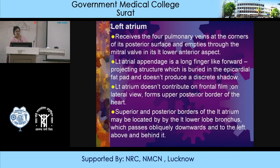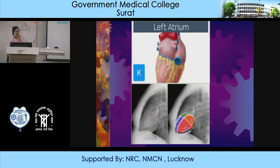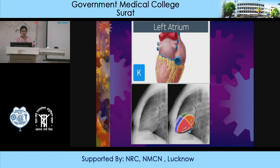You can see the pulmonary veins entering into the left atrium. On the lateral view, the right ventricle predominantly forms the anterior aspect of the heart and is in close relation with the sternum. The left ventricle forms somewhat the posterior border; however, the upper posterior border is formed by the left atrium.